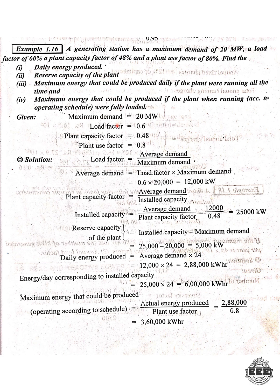So the given values are: maximum demand is 20 megawatts, load factor is 0.6 (that is 60% divided by 100), plant capacity factor is 0.48 (that is 48% divided by 100), and plant use factor is 0.8 (that is 80% divided by 100).